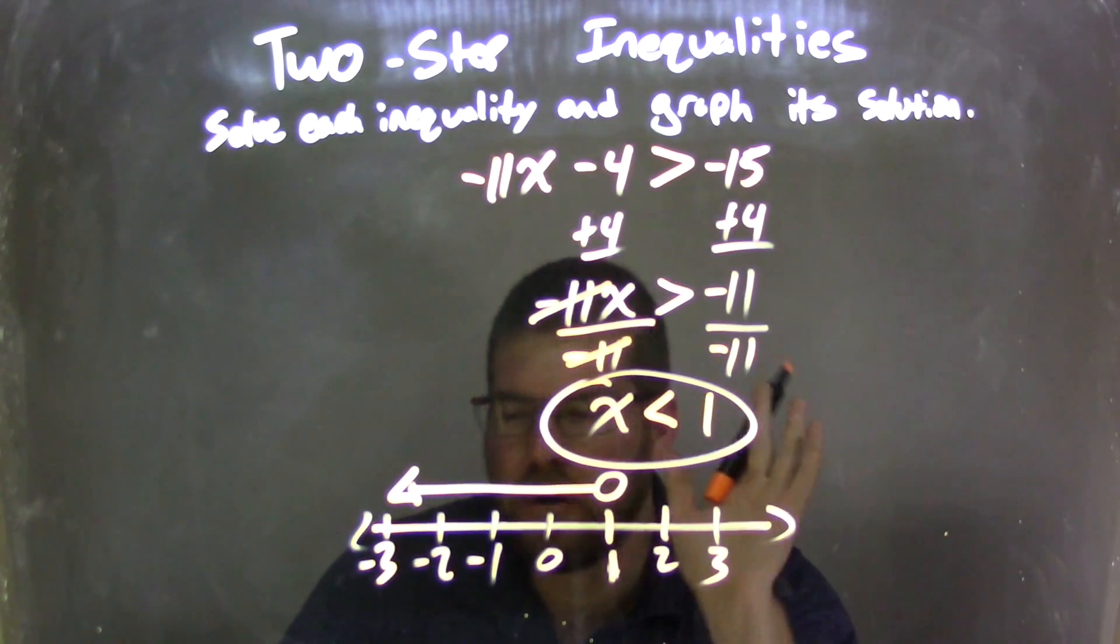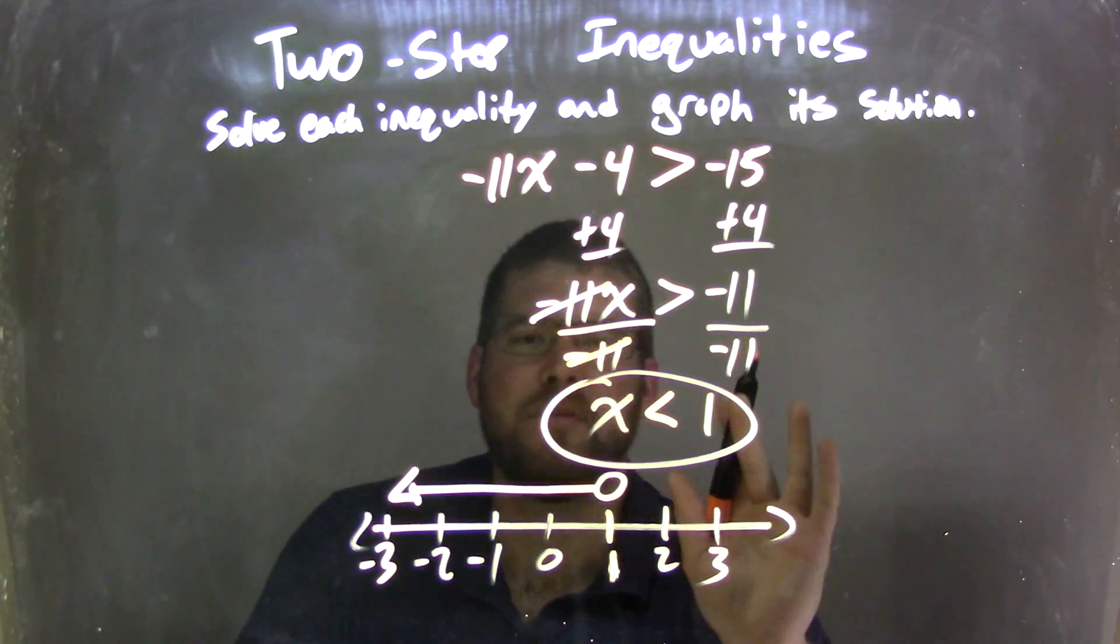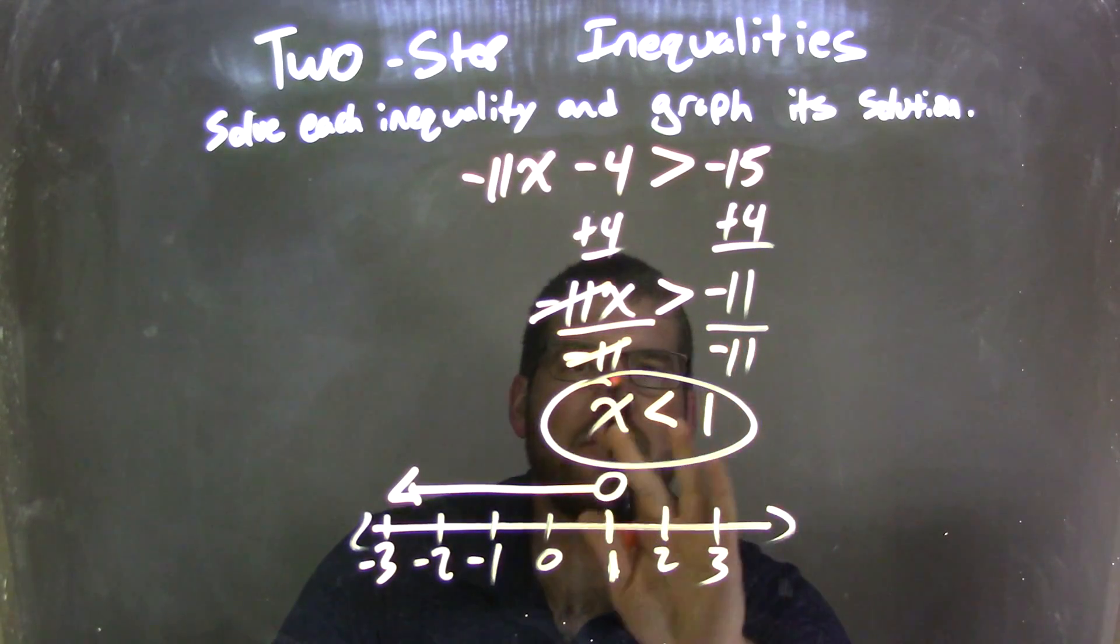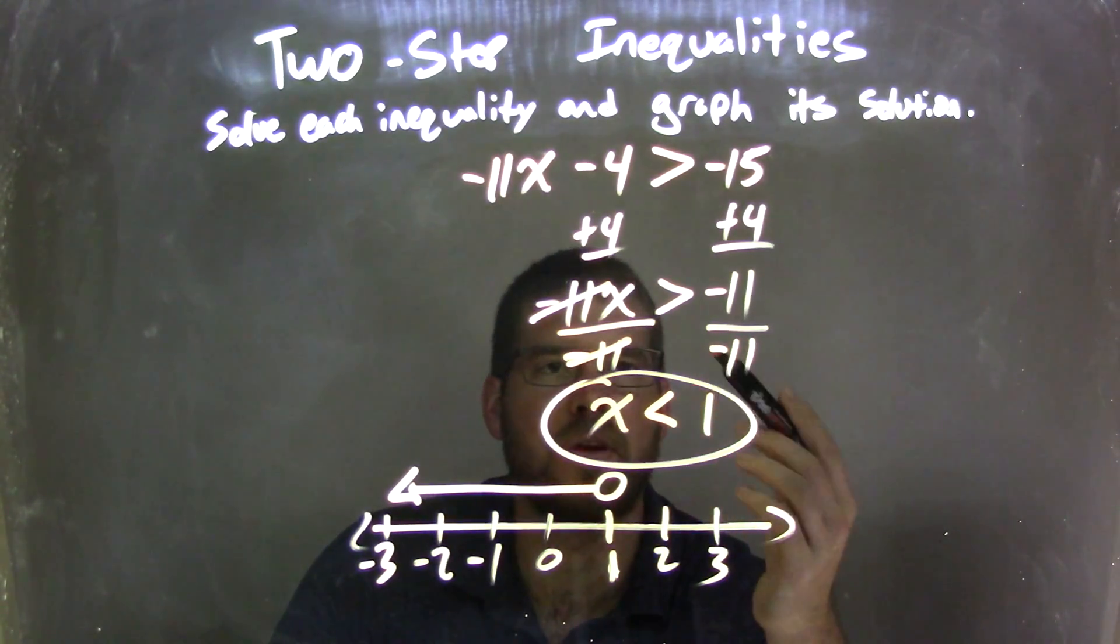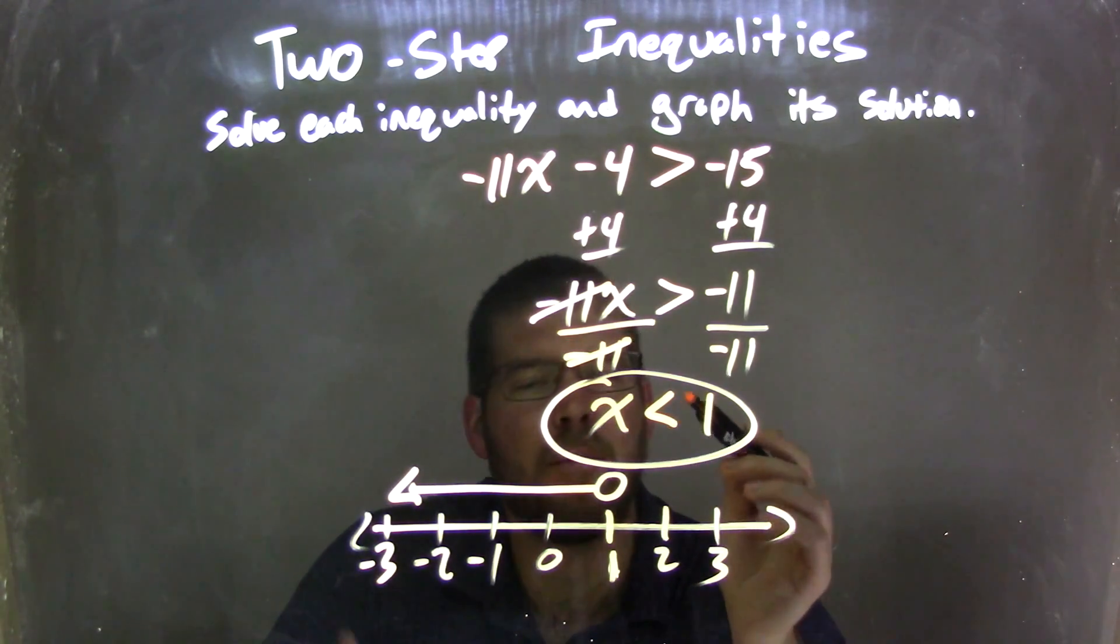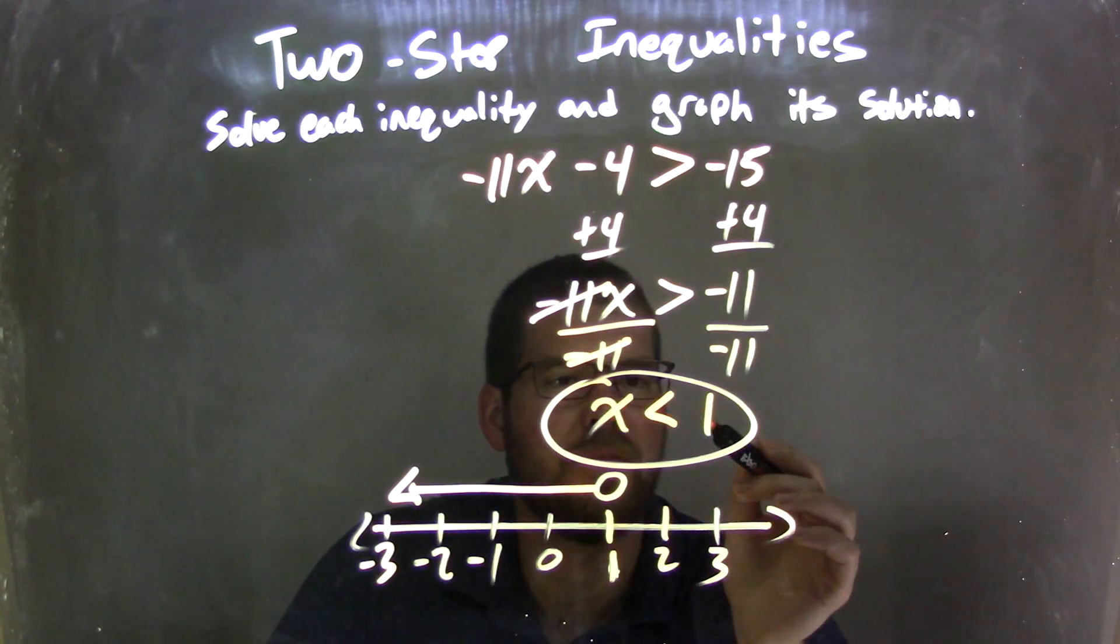But now, the tricky part, and again, I say this all the time, students mess this up a lot, is when we divide over an inequality by a negative number, we need to flip that inequality. So the greater than sign turns into a less than sign. So now we have our final answer of x is less than 1.